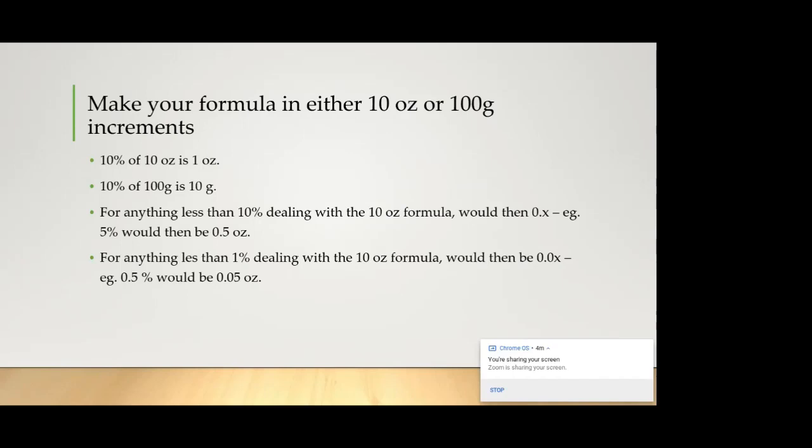The reason why I choose these increments is that it's close to a hundred percent, right? So a hundred grams, 100% of 100 grams is 100%. 100% of 10 ounces is 10 ounces, right? 10% of 10 ounces is one ounce. 10% of 100 grams is 10 grams. So you can see that when you're working in grams it becomes easier because it's a one-to-one configuration.